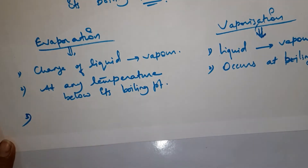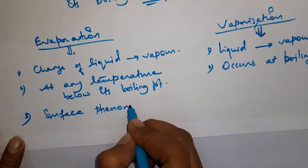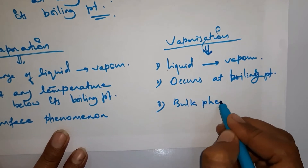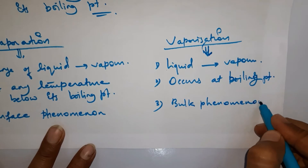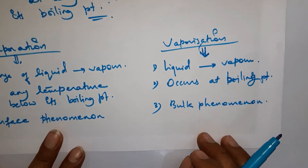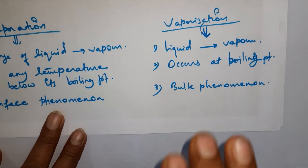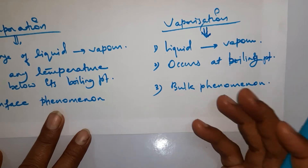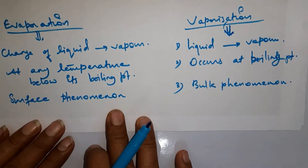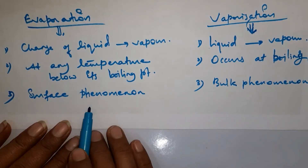One more important point: evaporation is a surface phenomenon, whereas vaporization is a bulk phenomenon. In bulk phenomenon, the whole particles of the liquid start vibrating once they reach the boiling point or gain kinetic energy through heating. But in evaporation, only the surface particles of the liquid gain energy and escape into the air or into gaseous form.